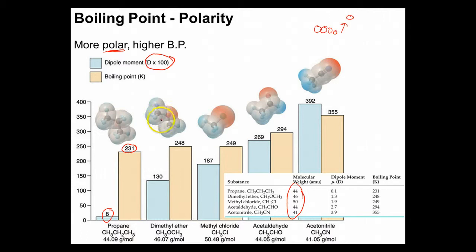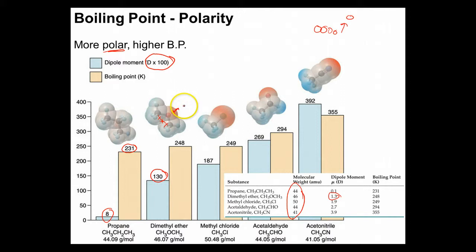Going to the next one: diethyl ether. Looking at the structure, in one direction the dipole moments are balancing each other out — two arrowheads coming together and canceling. But we end up having a little bit of a dipole moment pointing toward the oxygen, giving us 1.3 Debye. So we finally have some polarity — a decent partial negative on the oxygen side, a partial positive on the other — and some of that stickiness is starting to turn on.